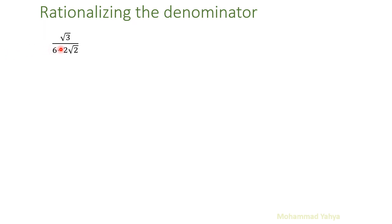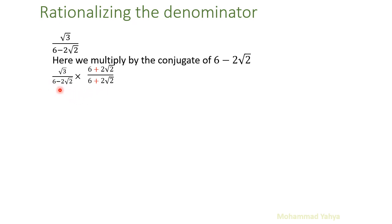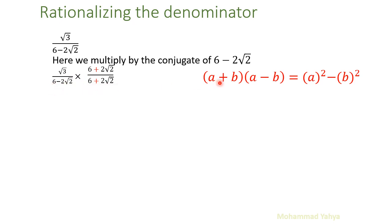Another example: radical 3 over (6 − 2 radical 2). Here we multiply by the conjugate of (6 − 2 radical 2). When we have two numbers with a sign between them, we multiply by the conjugate of the denominator. The conjugate of (6 − 2 radical 2) is (6 + 2 radical 2) — only the sign changes. We must multiply in both the numerator and the denominator.